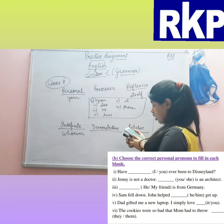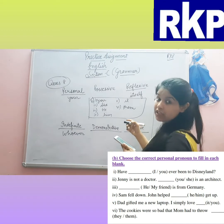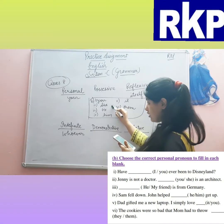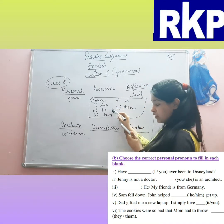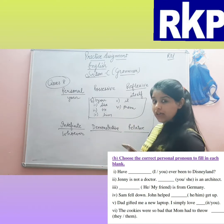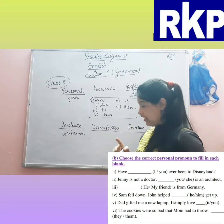Second: 'Jenny is not a doctor. ___ is an architect.' — She is an architect. Third: '___ is from Germany' — He or my friend? The answer is 'he.'